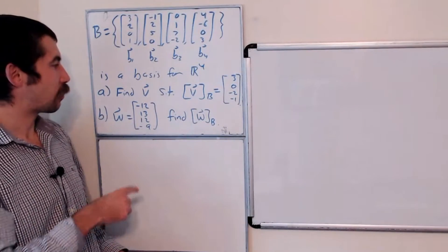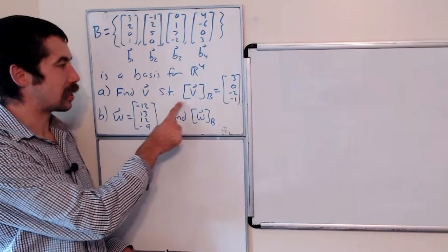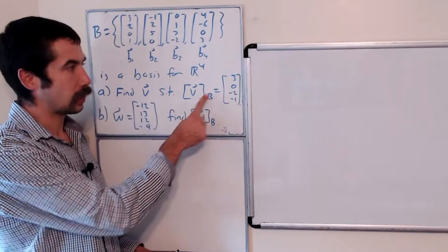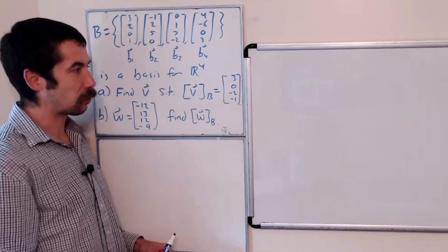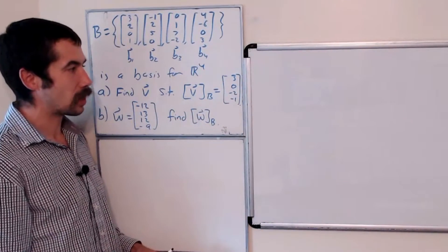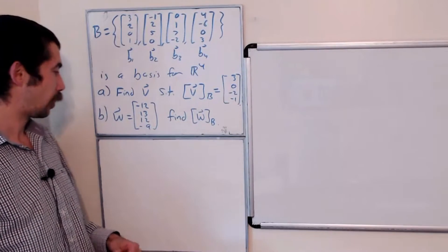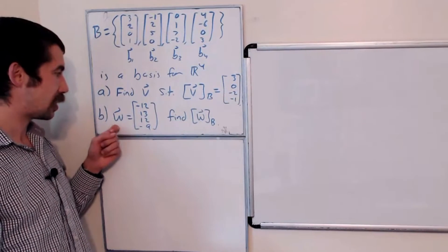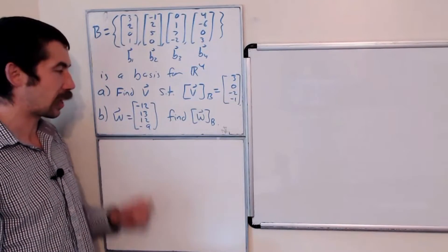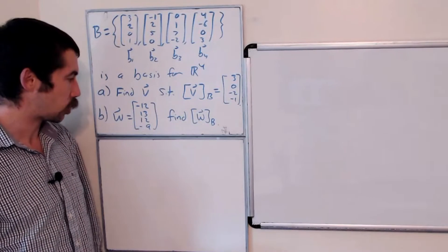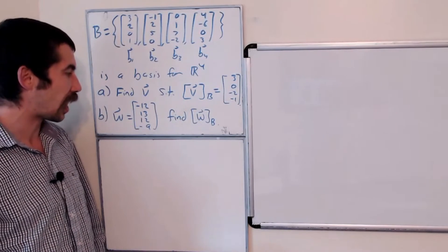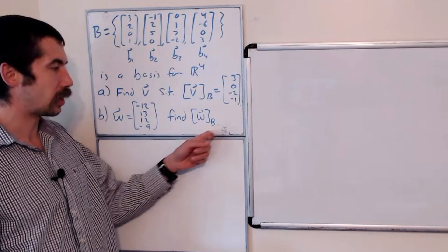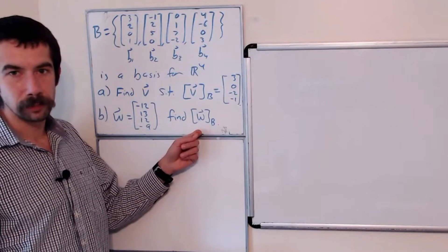Part A says: find a vector V such that the B coordinate vector for V is the vector [3, 0, -2, -1]. And Part B says: let W be the vector [-12, 13, 12, -9]. Find the B coordinates of W.